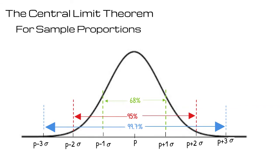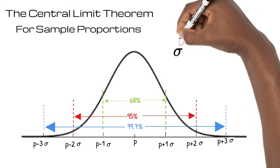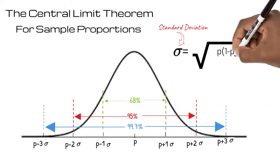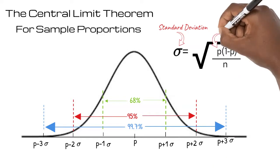In these problems we won't be given a standard deviation but not to worry we can calculate it. The standard deviation will be equal to the square root of p times (1 minus p) over n, where p is the average or actual proportion and n is the sample size.